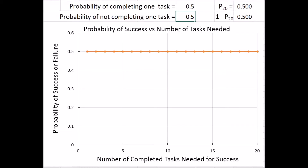Here we have the spreadsheet for our mathematical model for success. Our input is the probability of completing one task, which right now is set at 0.5.